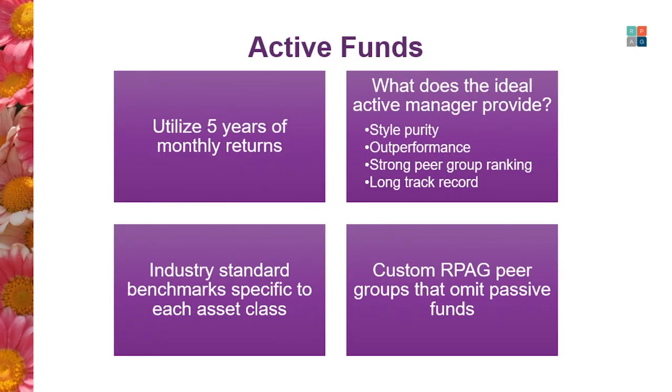The main objective of the scorecard is to identify skillful managers. When we break down what the ideal active manager provides, we boil it down to four points, with the first being style purity. We want a manager that's going to stay true to the fund's stated objective. Say we're looking to diversify the plan's lineup by adding a large-cap growth fund — it does us no good if that manager is investing in the mid-cap space or buying value stocks. The RPAG scorecard places a 30% weight to style in our analysis.